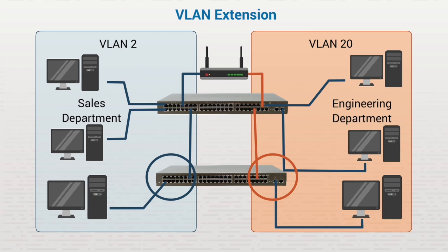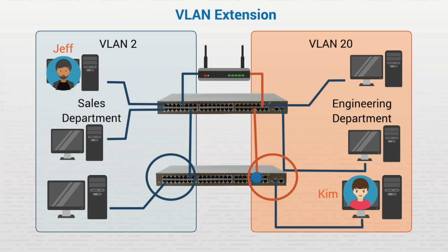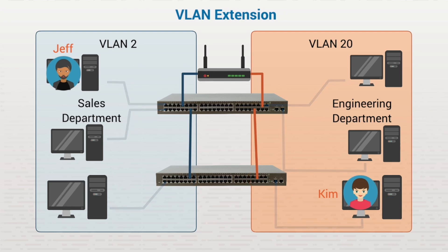For example, let's say that Jeff in sales sends data to Kim in engineering. The packet would go to the VLAN 2 port that Jeff's computer is connected to. The switch would then forward the packet to the router, which would then forward the packet to VLAN 20. The switch would look at the MAC address in the frame and forward the packet to the next switch. Finally, the packet would arrive at Kim's computer. You can see that each VLAN has a separate connection to the router, and the connections from the switches to each VLAN are separate as well.